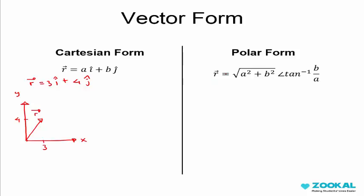Basically, you just use this kind of formula. r is equal to square root of 3 squared plus 4 squared. And the angle is arctangent of 4 over 3.